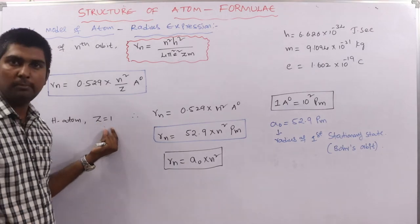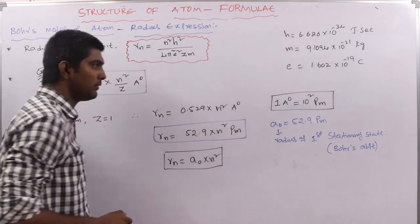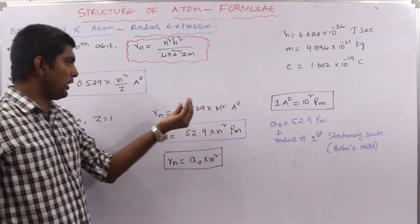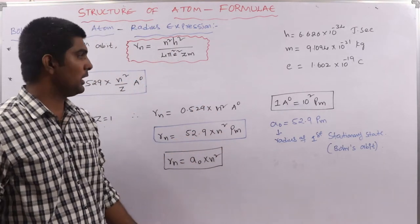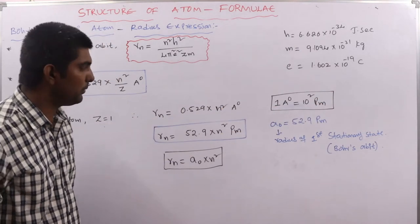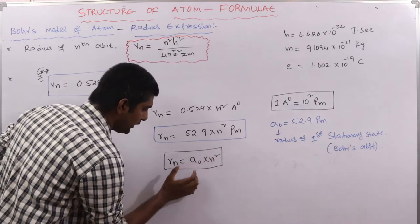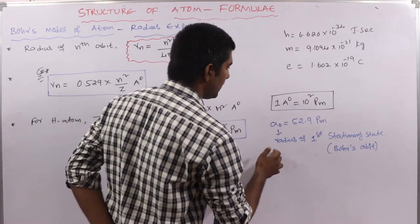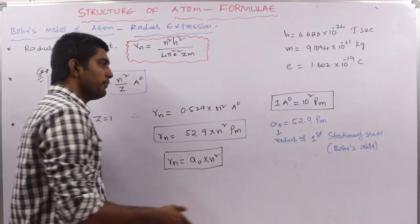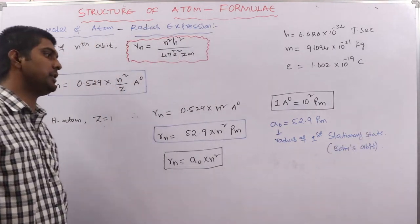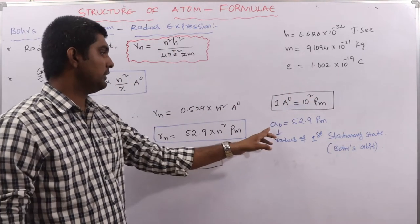For hydrogen (Z = 1): rn = 0.529 × n² Å, or 52.9 × n² picometres (since 1 Å = 100 pm). The symbol a₀ = 52.9 pm represents the radius of the first stationary state, also called Bohr's orbit.